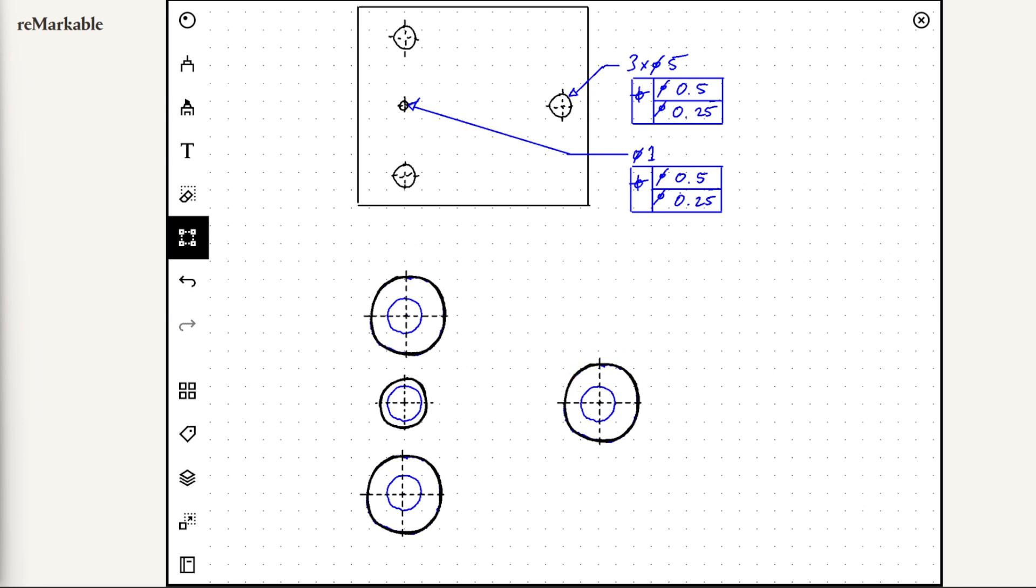I've drawn this so that the upper segment tolerance zone is this blue circle, and then the black circle is the actual feature. And I'm just going to go over the simultaneous requirements aspect of this first. So simultaneous requirements is what happens when two features or two patterns of features have the same datum references in the same order and at the same material condition. When those conditions are met, they're treated as a single pattern.